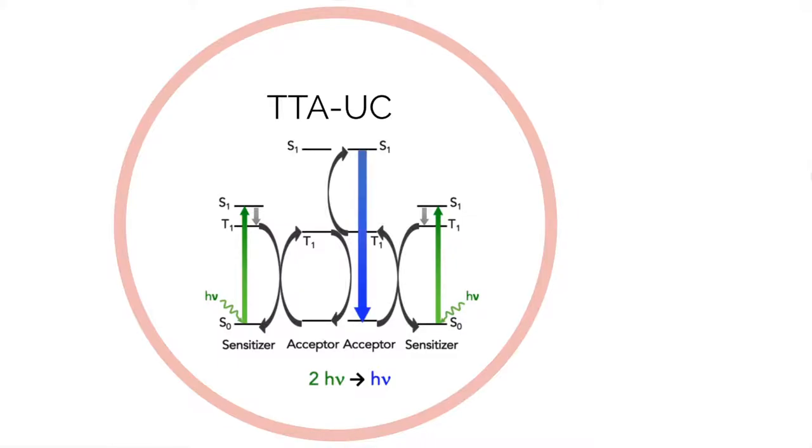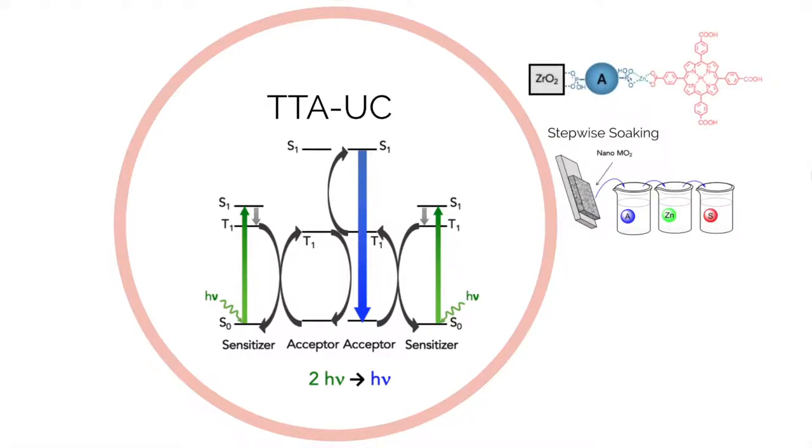Then we can harvest a high-energy photon from the fluorescence of the acceptor singlets. In our group, we used a unique bilayer structure to harvest photon upconversion. Here we have our acceptor molecule chemically bound to the metal oxide surface through a phosphonate binding group. Then the sensitizer coordinates with the acceptor molecule through a zinc linking ion. We prepared this bilayer by a stepwise soaking method where we take the metal oxide surface and soak it into the acceptor molecule, then the zinc linking ion solution, and then the sensitizer molecule solution.